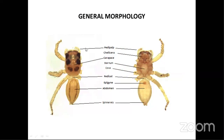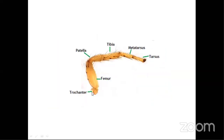This is the general morphology. The structure is the carapace and abdomen, joined by a very thin structure called the pedicle. Here you have the chelicerae, you have the pedipalps — in males these are modified into copulatory organs which help in the transfer of sperm. This is the chelicerae with mouth parts, the labium and maxillae, and the sternum. You have the female genital plate here, the epigyne. These are the abdominal spinnerets. The leg parts beginning from the trochanter, femur, patella, tibia, metatarsus, and tarsus.